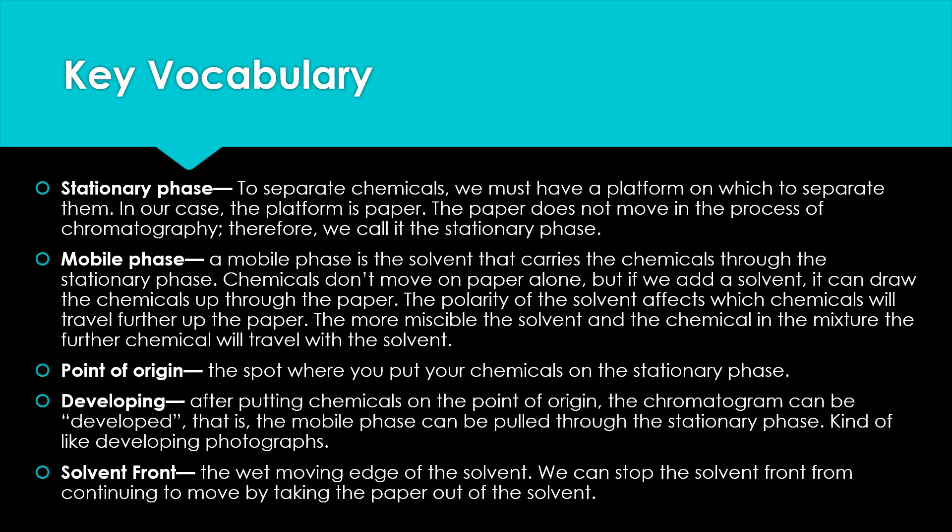Some vocabulary: the stationary phase is the platform on which we separate chemicals — in our case, paper or a TLC plate. The paper does not move, so we call it the stationary phase. The mobile phase is the solvent that carries the chemicals through the stationary phase. Chemicals do not move on paper alone, but adding a solvent draws and pulls them up through the paper. The polarity of the solvent affects which chemicals will travel further up the paper.